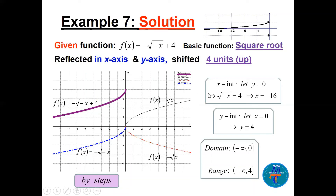Finding intercepts: for the x-intercept, let y = 0, giving x = −16. Though the graph shown only goes to −8, it does cross the x-axis at −16. For the y-intercept, set x = 0: y = 4. The domain is (−∞, 0] and the range is (−∞, 4]. This method is called graphing by steps — use dotted lines for intermediate graphs and a solid line only for the final graph.